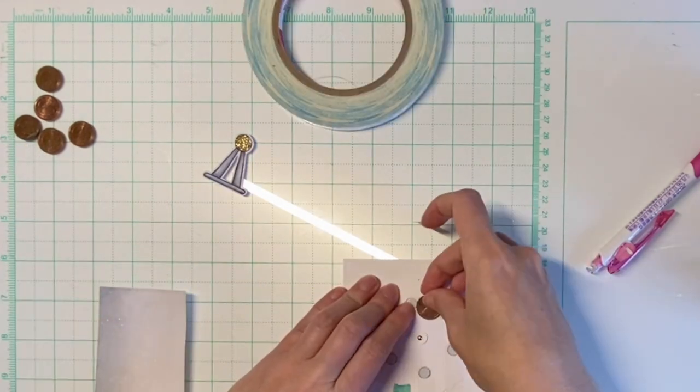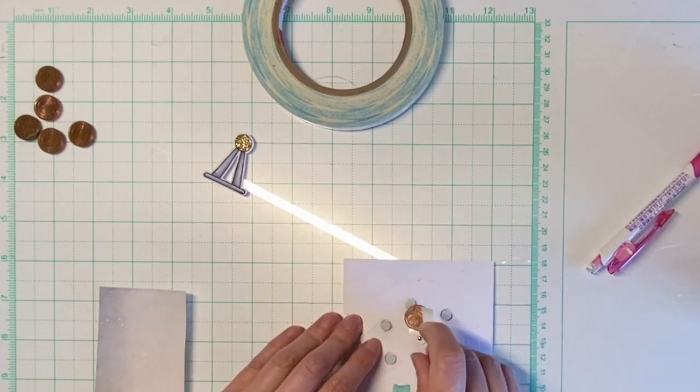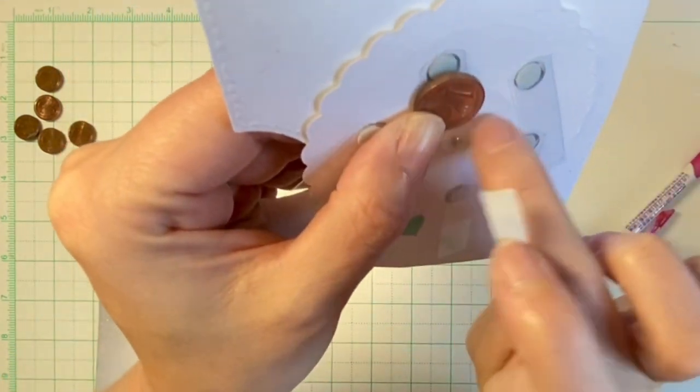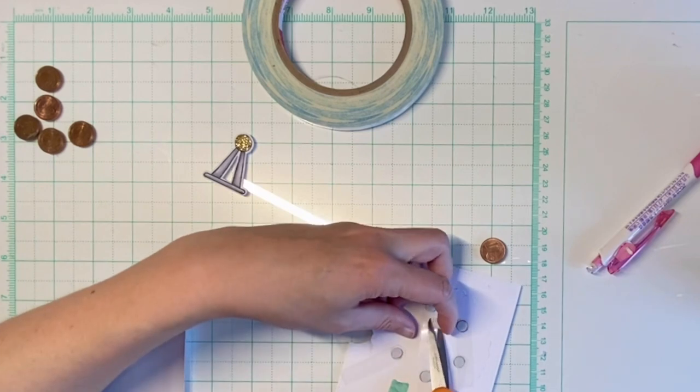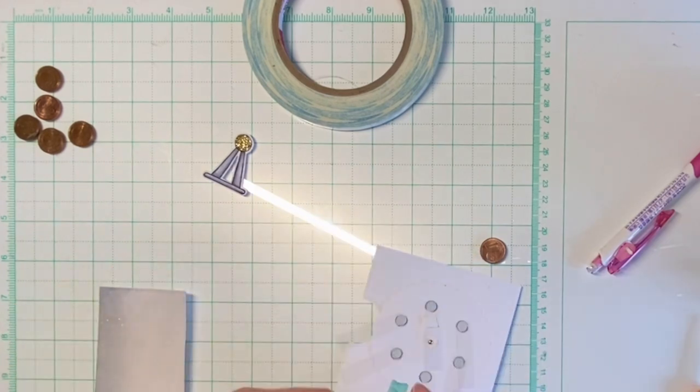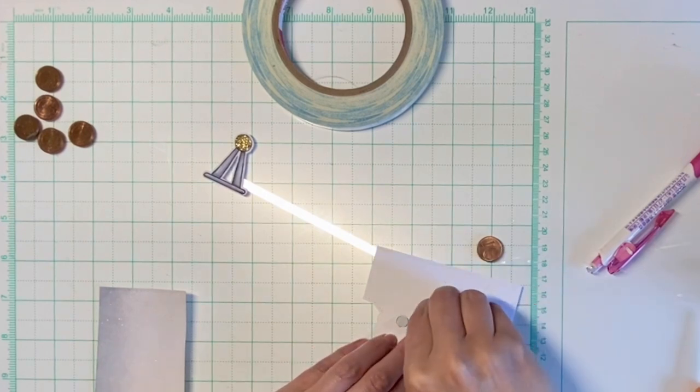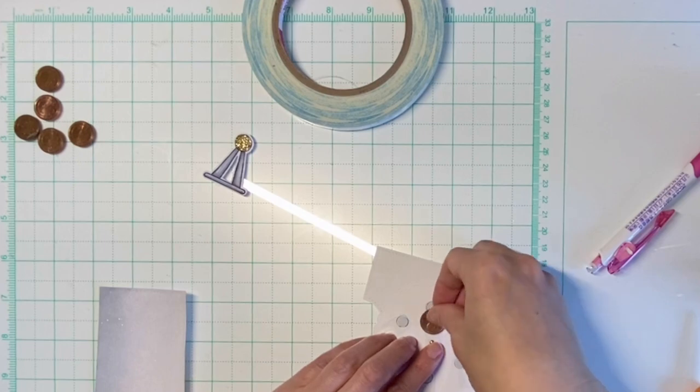So now I will attach the penny to the acetate strip as a weight, and then I can cut the strip down. And it is very important to make sure that the weight can rotate freely and does not get caught on either of the two adjacent gondolas or on the center circle.